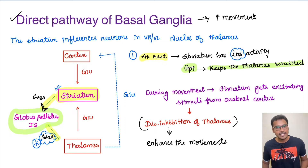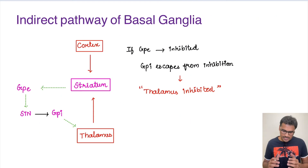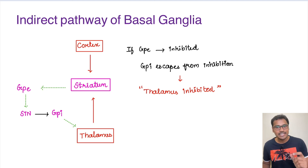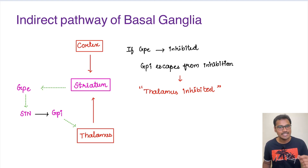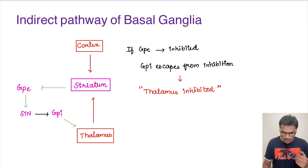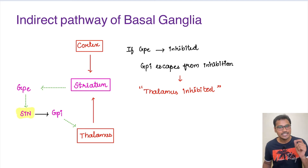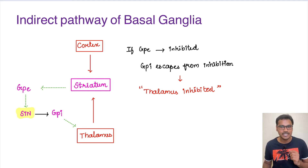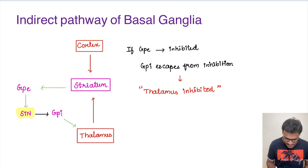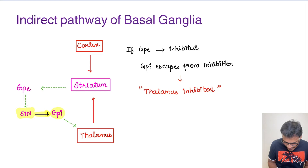Now coming to the indirect pathway. The striatum not only goes to the globus pallidus internus but also to the globus pallidus externus (GPe). The GPe has a connection to the subthalamic nucleus. Importantly, the subthalamic nucleus is the only stimulatory part — the only structure producing glutamate — in the entire interconnections of basal ganglia. So the subthalamic nucleus can stimulate the globus pallidus internus.